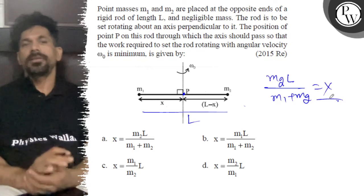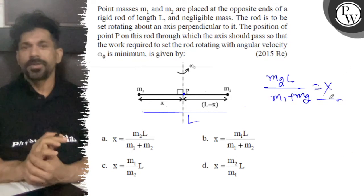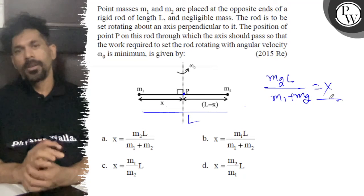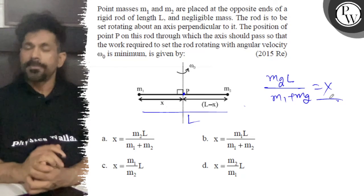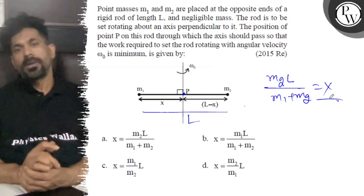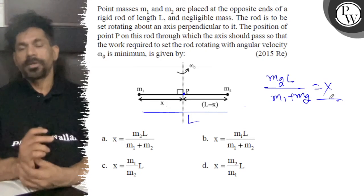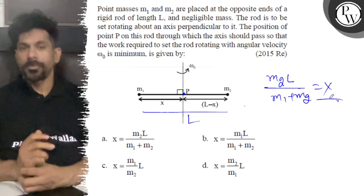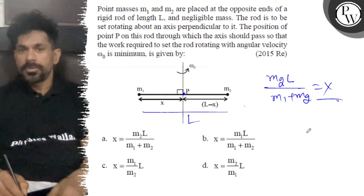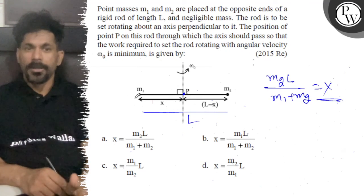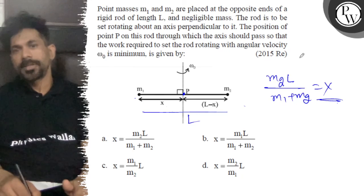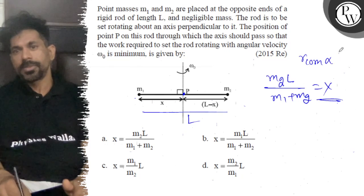If we ask that work required to set the rod rotating with angular velocity minimum, then minimum work occurs when any body can rotate about its own center of mass. If the center of mass will rotate, then x will be the center of mass position from M1. And we know that RCOM is inversely proportional to the mass.